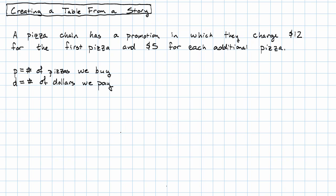Now looking at this story, I think that the normal way to understand it is that we choose how many pizzas to buy and observe how much it costs. That means that the number of pizzas will be our independent variable, and the amount of money we pay will be our dependent variable.